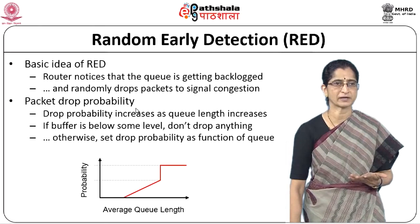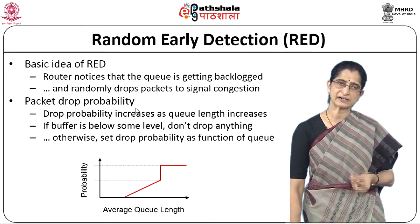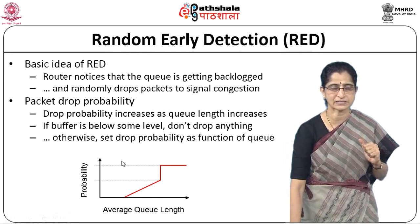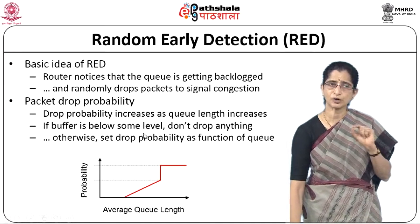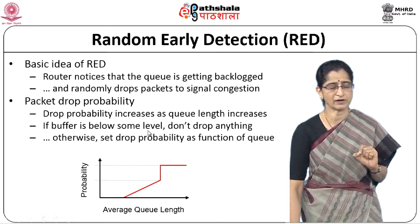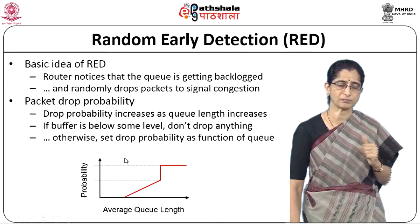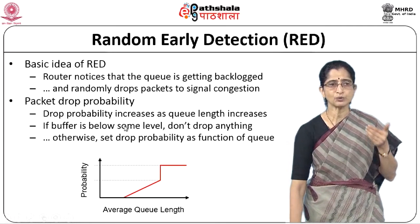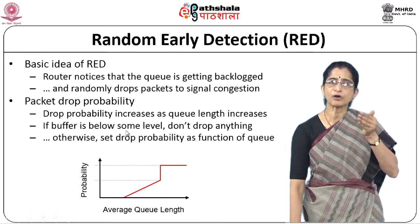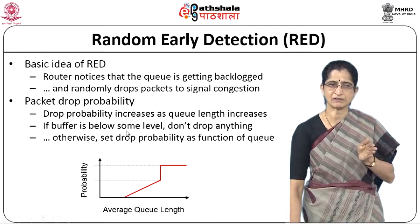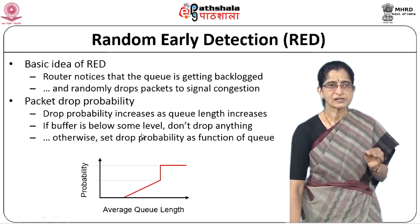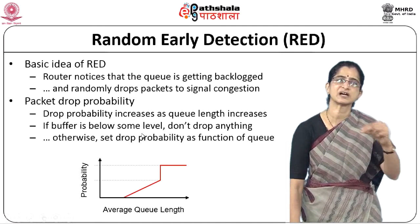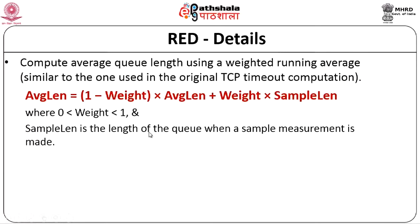Based on TCP's normal congestion control mechanism, the moment a packet is dropped and no acknowledgement is received, TCP automatically decreases the congestion window size. If we are randomly going to drop packets, we need to calculate a drop probability. This probability is normally based on the length of the queue. If the queue length is below some level, do not drop anything. But the moment it crosses some threshold, as a function of queue length, we will start dropping packets. This is the idea used in random early detection.